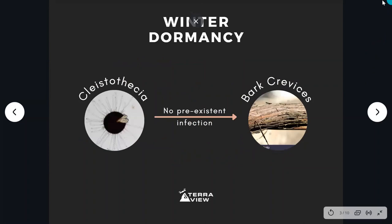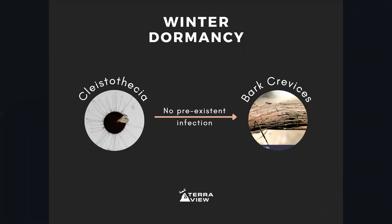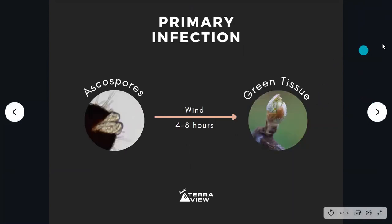To talk about the life cycle of powdery mildew, imagining we don't have a pre-existing infection, powdery mildew is going to overwinter in its fruiting bodies called cleistothecia, as you can see in this image. It's not actually going to be on soil — it's going to be in the wood and bark crevices. Cleistothecia contain spores called ascospores.